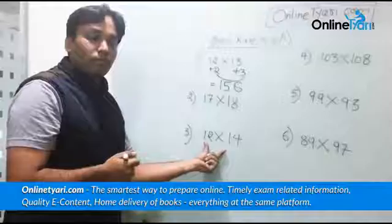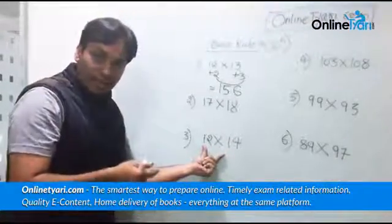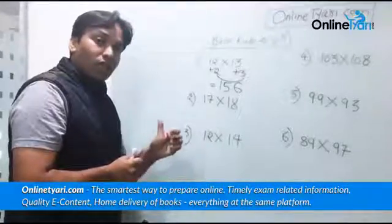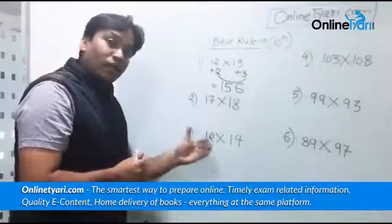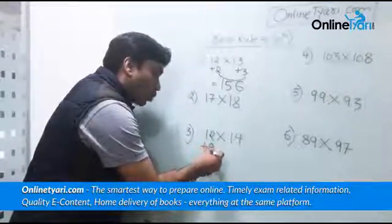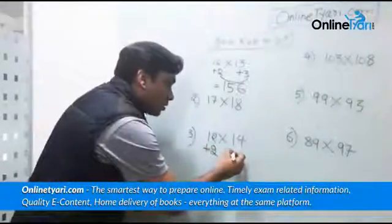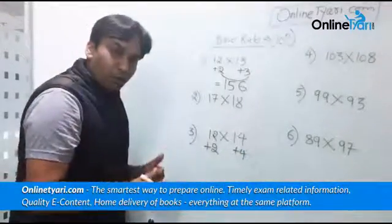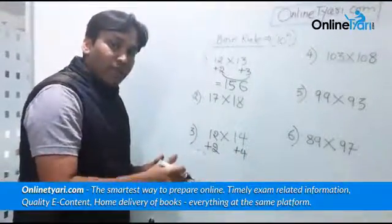Are they closer to each other? Yes. Are they closer to 10 to the power 1? Yes. So what should be our base out here? 10 has to be our base. This number is 2 more than our base, this number is 4 more than our base. What are we going to do now? We are going to multiply these two excesses.